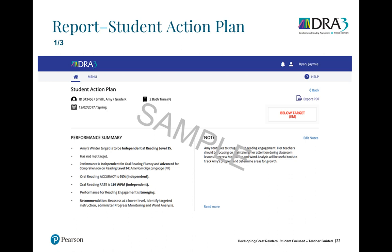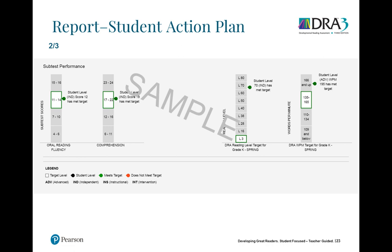The student action plan is especially useful for parent-teacher conferences or meetings with administrators or reading coaches, as it shows exactly where the student is and what their current action plan is. In the visual display, green indicates the student has met their target, red indicates they fell below, alongside the green target indicator.